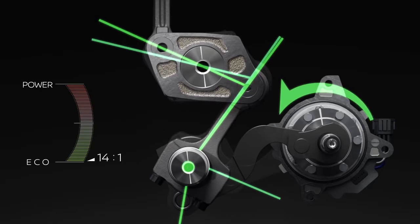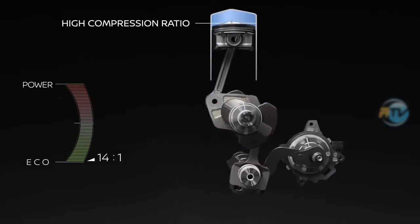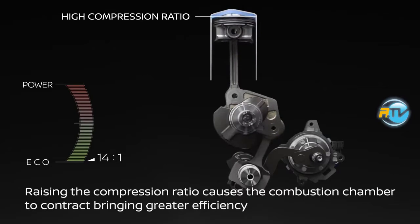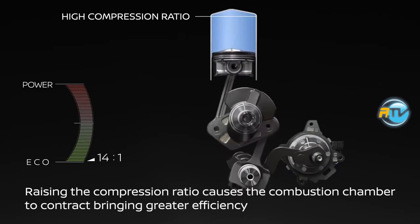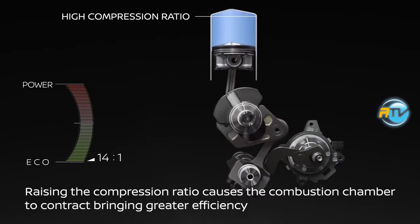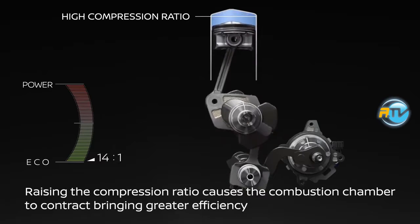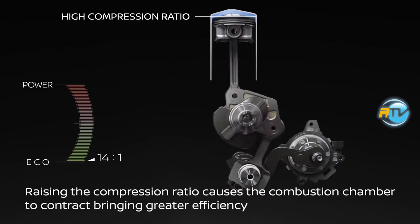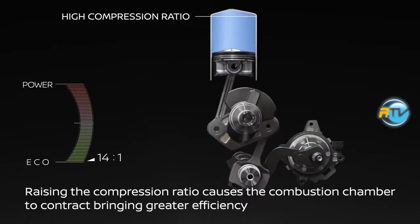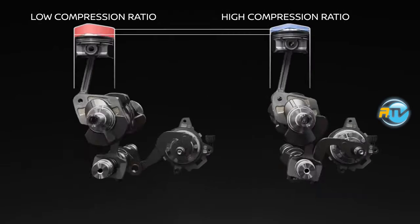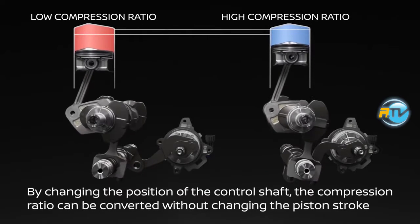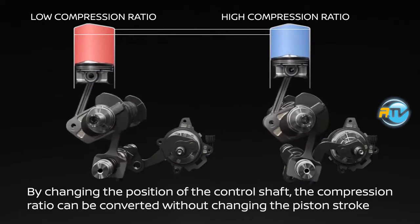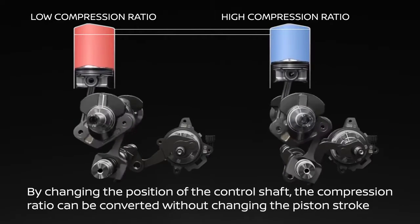This is fantastic — by changing the position of the control shaft, the compression ratio can be varied without changing the piston stroke, keeping the compression pressure high whether I'm going full throttle or slowly, and the motor runs with excellent efficiency.